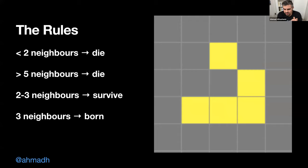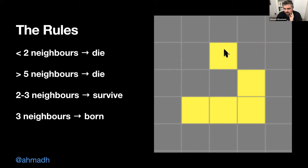Now here's a more interesting pattern. You can see the rules on the left. This cell has only one neighbor so it's going to die. This one has three neighbors so it will stay alive. This one has two neighbors and stays alive. This one has two neighbors and stays alive. This one has only one neighbor so it will also die.